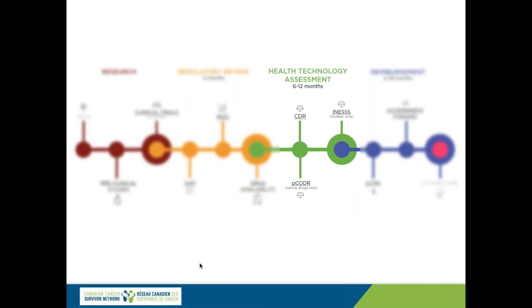Now we shift to health technology assessment — the phase that asks whether we want to pay for these drugs out of public funds. There are only three ways to get a medication in this country with a prescription: you can pay cash, you can use private insurance, or you can access it through one of the public formularies if you qualify and the drug is covered.